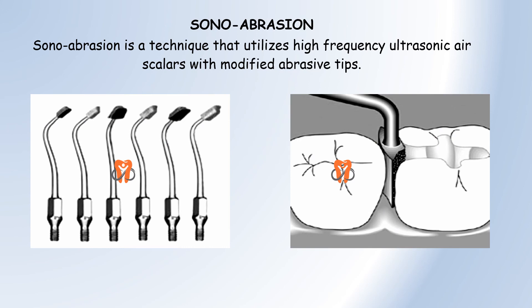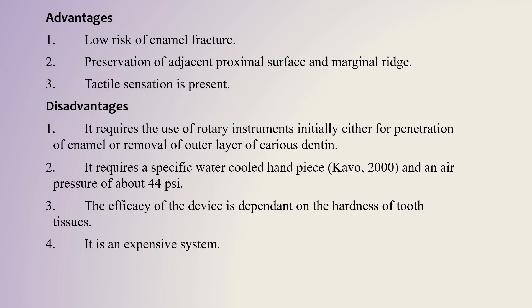Sonoabrasion is a technique that utilizes high-frequency ultrasonic air scalers with modified abrasive tips. The scaler tip is shaped like a proximal box of a cavity preparation, so when placed on the proximal surface it can cut directly according to the proximal box shape. These abrasive tips come in different sizes, allowing for minimally invasive cutting preparation.